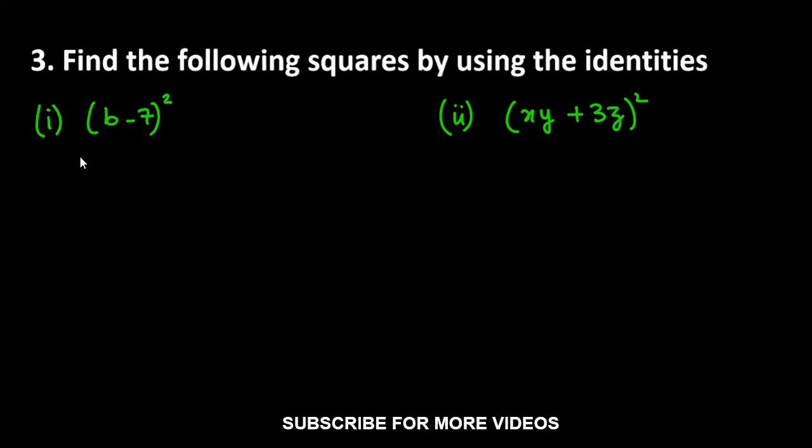Here we have to find the following squares by using the identities. We have to use identities and simplify these squares.